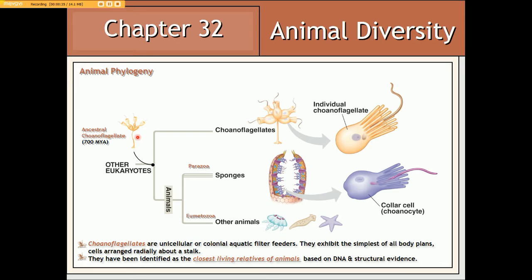This phylogenetic tree is based on molecular and structural homologies. If we examine modern coanoflagellates, we see a striking similarity with regards to their cells and the cells that comprise sponges, the simplest of all animals. This, coupled with molecular evidence, suggests a close link between the coanoflagellates and all animal groups. Thus, we can say with a high degree of confidence that coanoflagellates are the closest living relatives of all animals.